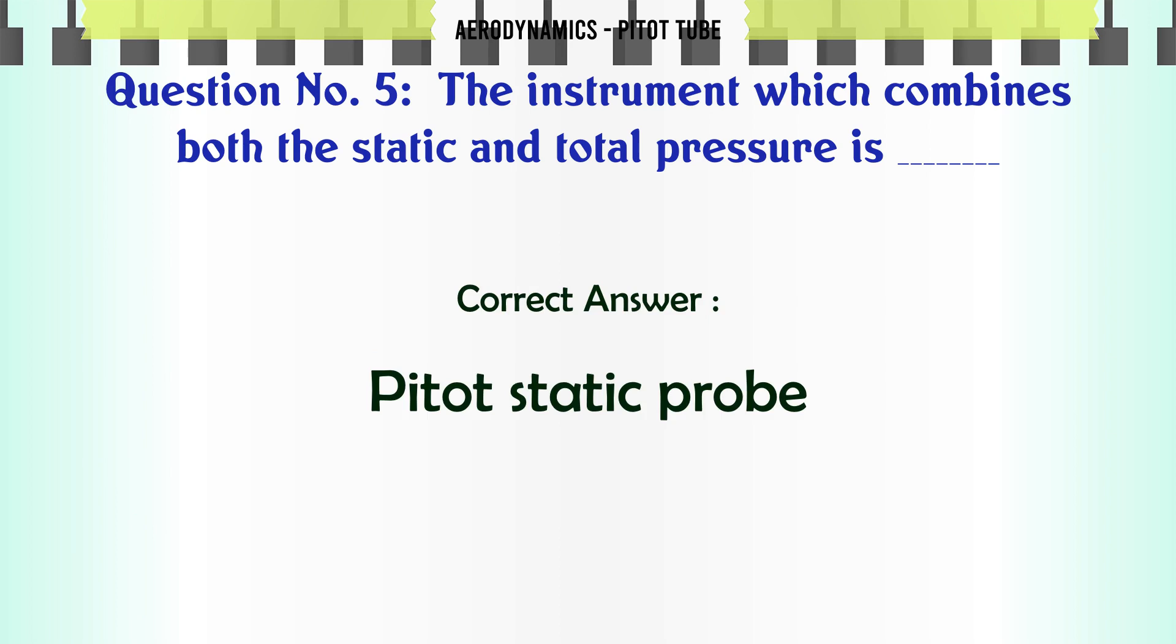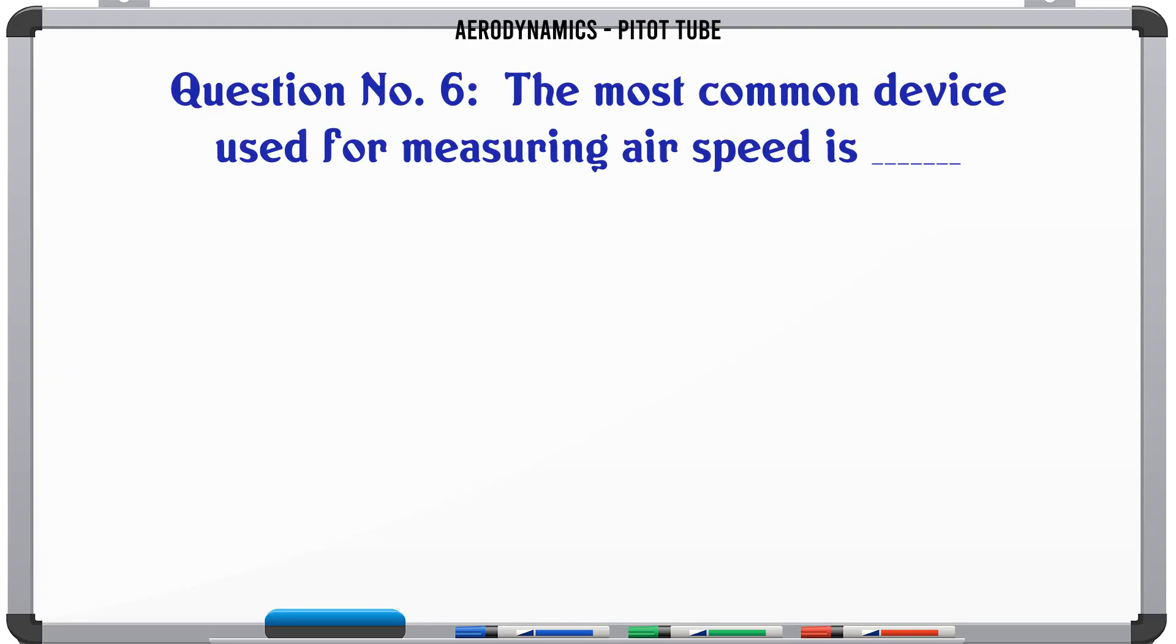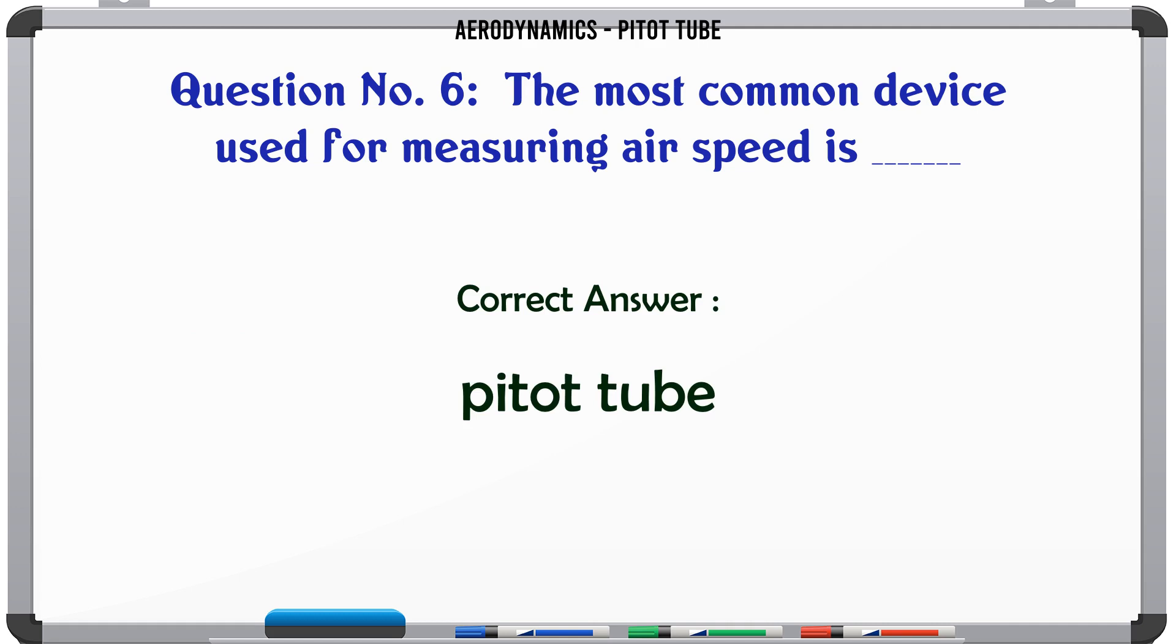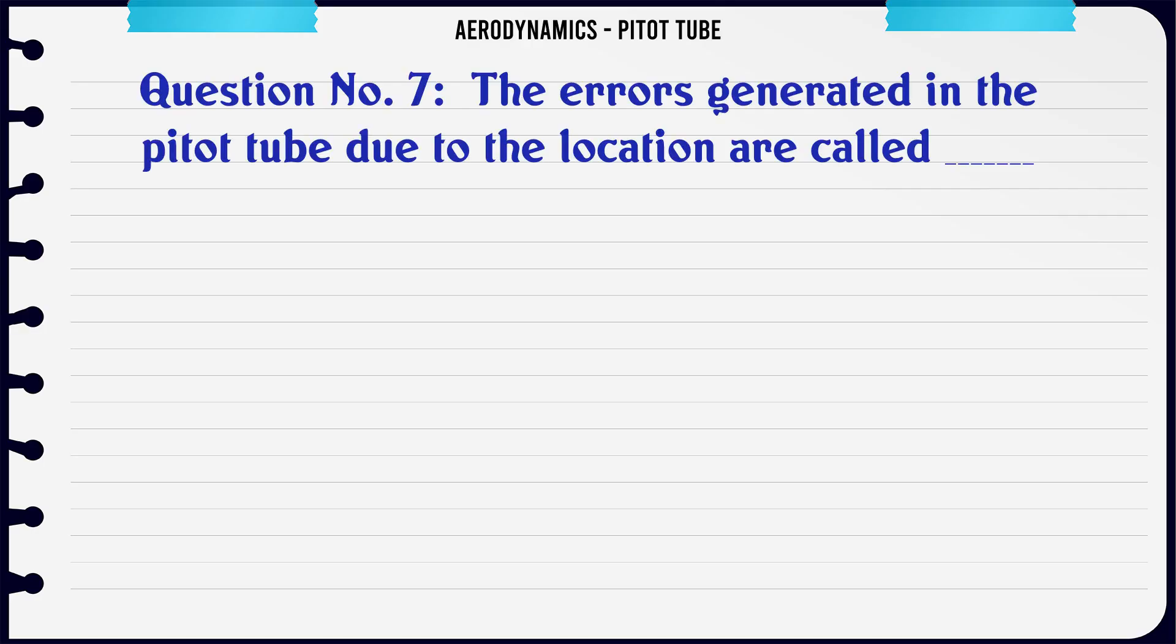The most common device used for measuring airspeed is: A. Altimeter, B. Thermometer, C. Pressure gauge, D. Pitot tube. The correct answer is Pitot tube.